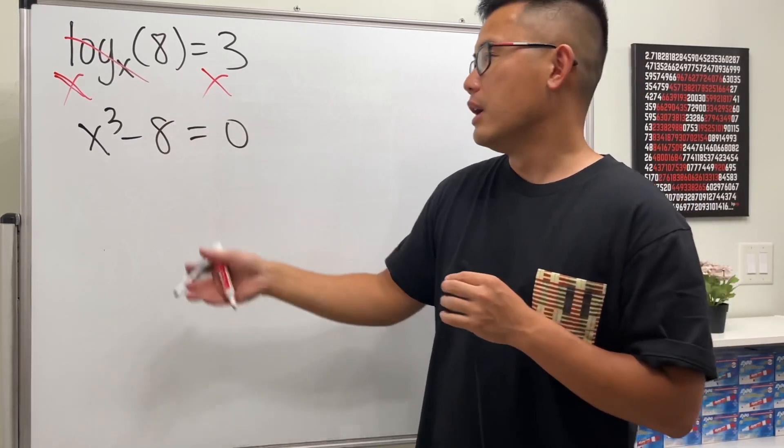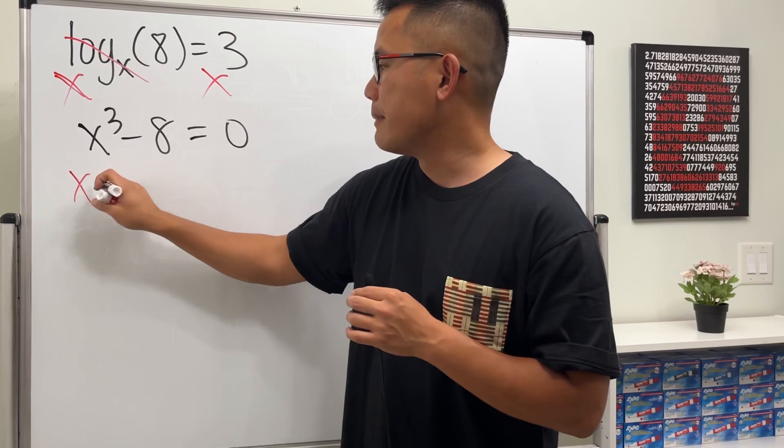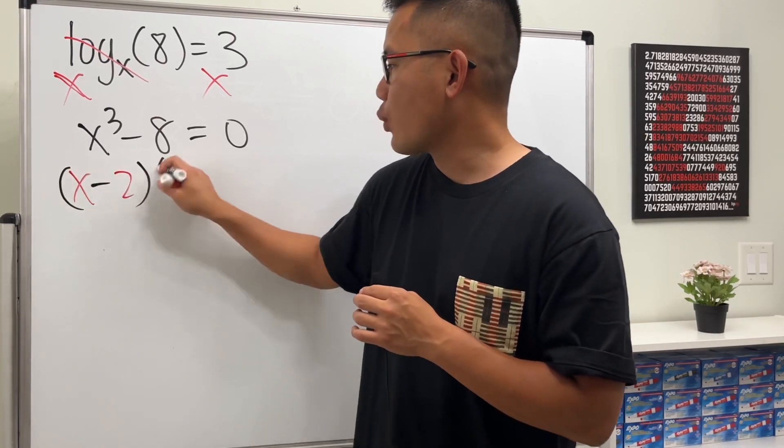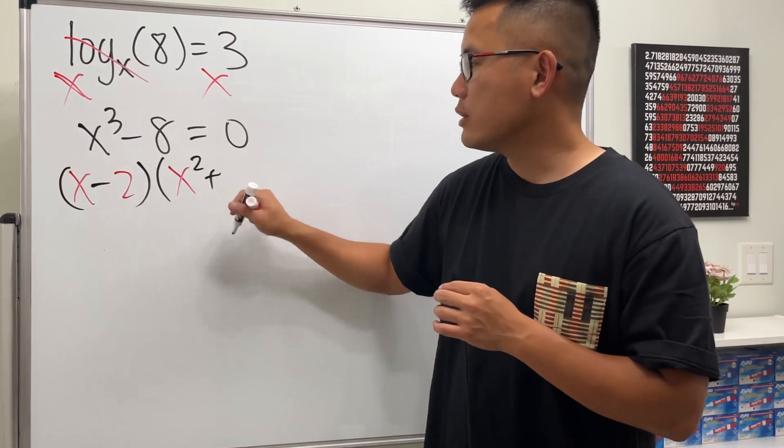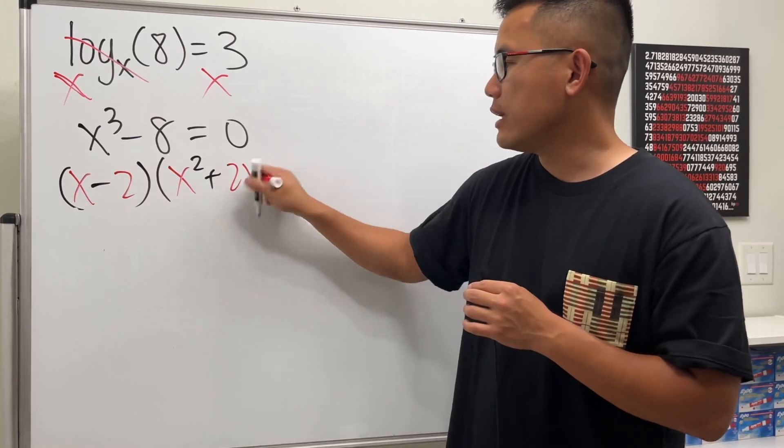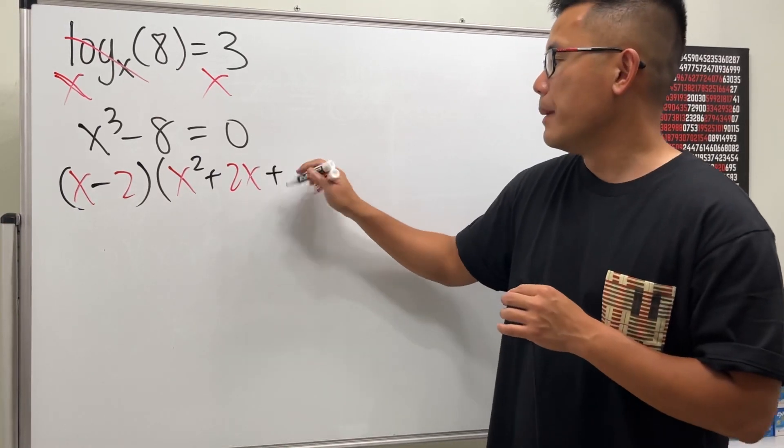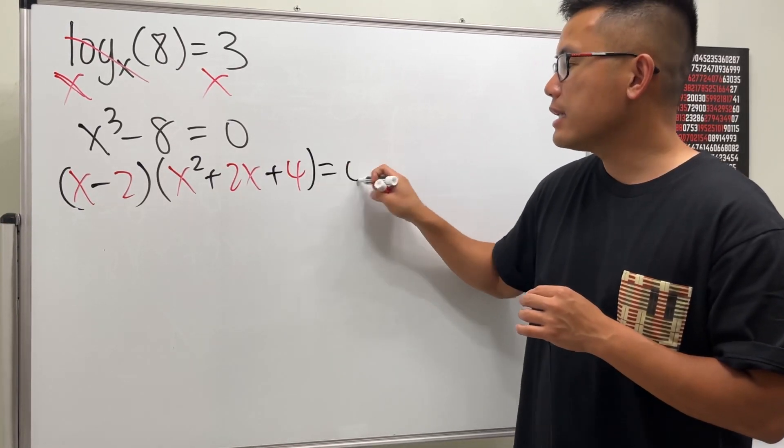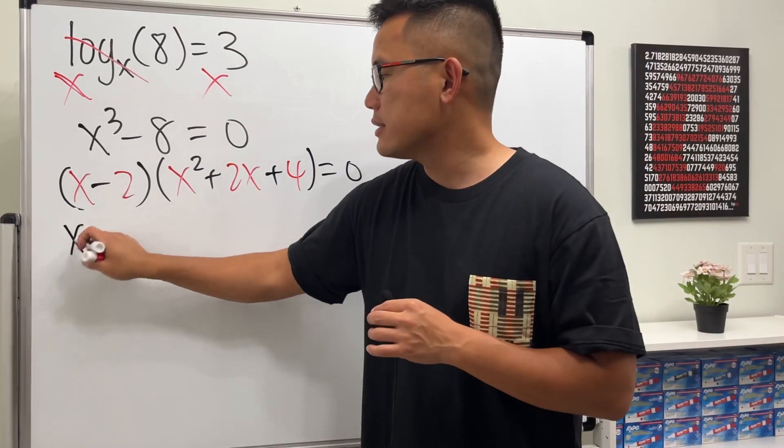And now let's solve this by factoring. Difference of two cubes, we will get x minus 2 times x squared. And then we just add 2 times that, which is just 2x. And then we add 2 squared, which is just going to be plus 4. And now we can see that from this right here, we can see x is equal to 2.